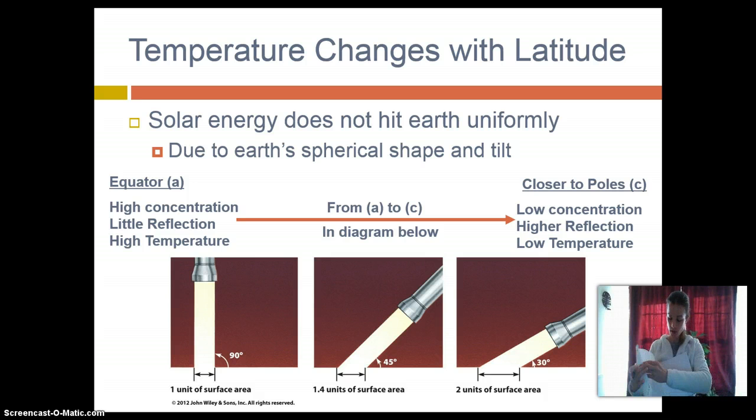Now, the reason that the angle changes isn't because of how the sun is entering, that doesn't change, it's because of the surface of the earth. The surface of the earth is a curve, right? It's essentially a sphere. So here's our surface of the earth, and we have our solar energy coming in,